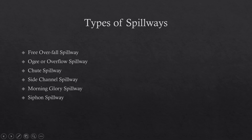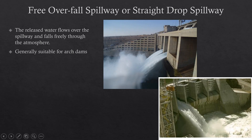The first kind is the free overfall spillway. This is basically just an opening — it may be in the form of a weir or notch. Water is simply allowed to flow over the spillway, forming a nappe of water that falls directly to the downstream pool.